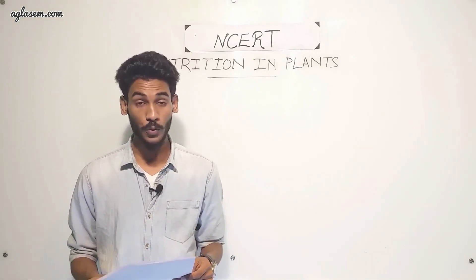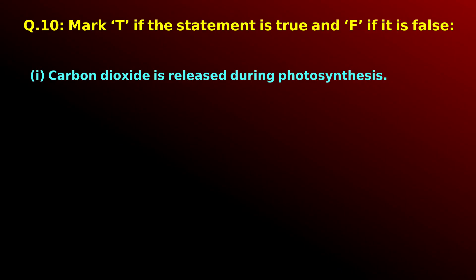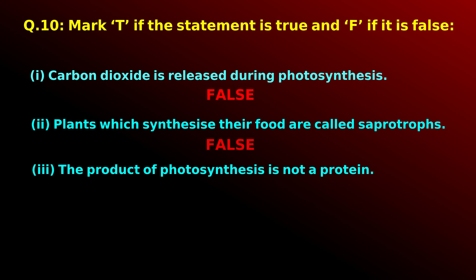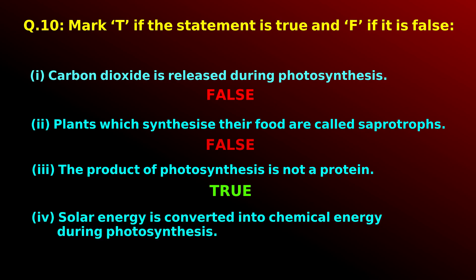Question 10 — Mark T for true and F for false. Statement 1: Carbon dioxide is released during photosynthesis — False, because oxygen is released and carbon dioxide is used as a raw material. Statement 2: Plants that synthesize their food are called saprotrophs — False, they are called autotrophs. Statement 3: The product of photosynthesis is not a protein — True, because the product is a carbohydrate. Statement 4: Solar energy is converted into chemical energy during photosynthesis — True.